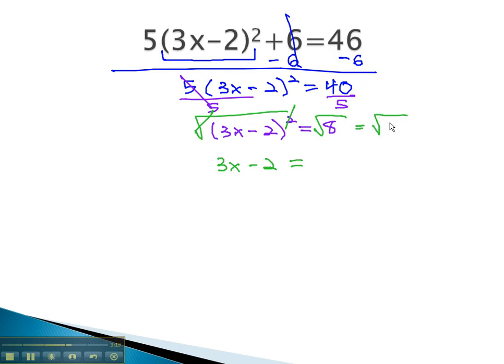However, if we found the prime factorization of 8, it is 2³. This means we can take a 2 out and leave a 2 behind, so we get 2√2.